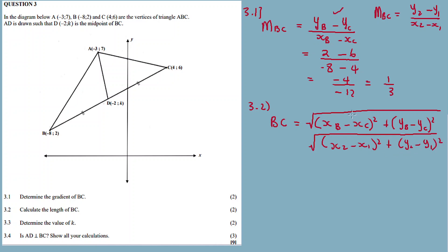It's just to do a substitution and solve the length of BC. Open bracket, xB is negative 8 minus xC is 4, squared, plus yB is 2 minus yC is 6. Then BC is equal to square root of negative 8 minus 4 squared.